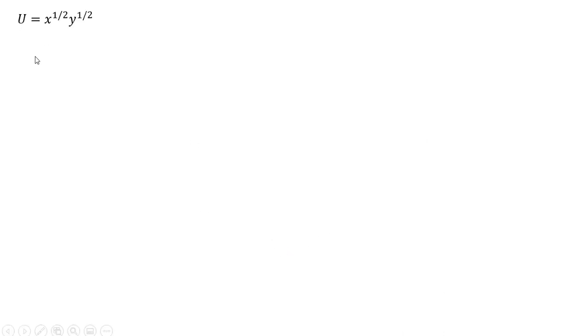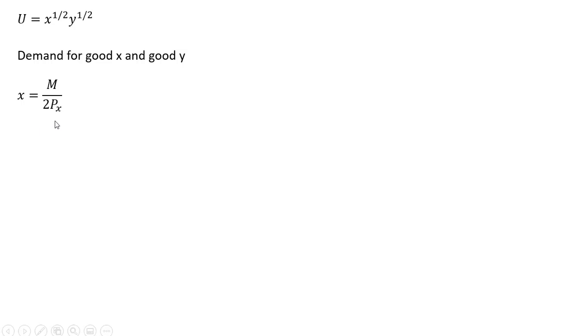Here's our consumer's utility function — it's a function of units of good X and good Y. The demand for good X and good Y, given this utility function, I'll just give you the demands. The demand for good X is going to be the consumer's income divided by two times the price of good X. The demand for good Y is going to be the consumer's income divided by two times the price of good Y.